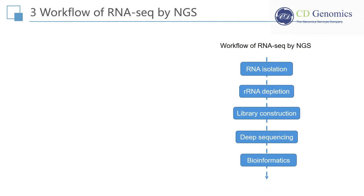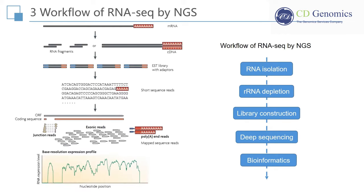The workflow of RNA-Seq by utilizing high-throughput sequencing technology is illustrated in the figure. Briefly, long RNAs are first converted into a library of cDNA fragments through RNA or DNA fragmentation. Sequencing adapters are then attached to each cDNA fragment, and sequence data are generated in a high-throughput manner from both ends. The resulting sequence reads are subsequently aligned with the reference genome or transcriptome, and are classified into three types: exonic reads, junction reads, and poly-end reads. A base-resolution expression profile can be generated by using these three types of sequence reads.